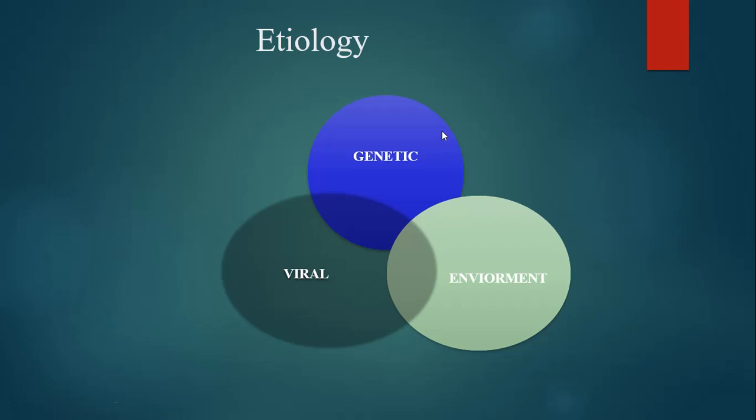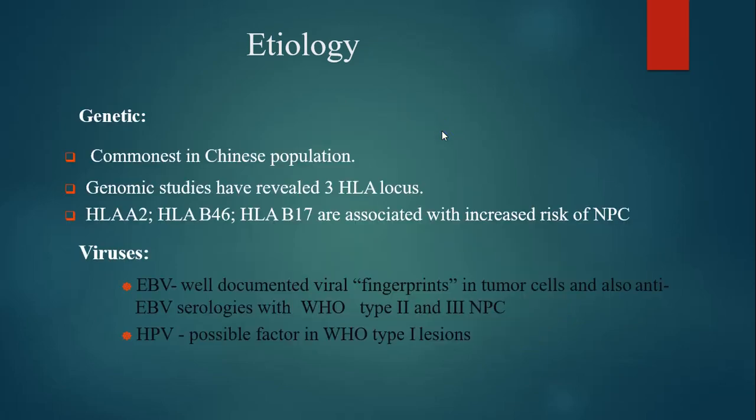What is the etiology of nasopharyngeal carcinoma? One is genetic, the other is viral, and the third is environmental. It is commonest in the Chinese population and genomic studies have revealed three human leukocyte antigen loci: HLA-A2, HLA-B46, and HLA-B17, which are associated with increased risk of nasopharyngeal carcinoma.